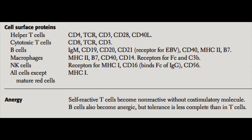NK cells have receptors for MHC class I recognition. They express CD16, which binds to the FC portion of IgG, and CD56, which is a unique marker for NK cells used as a marker of identity.